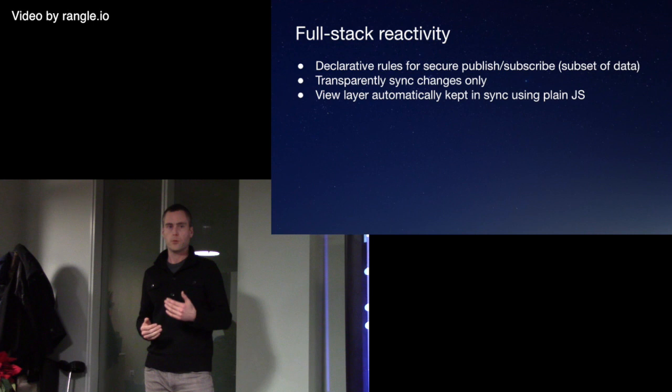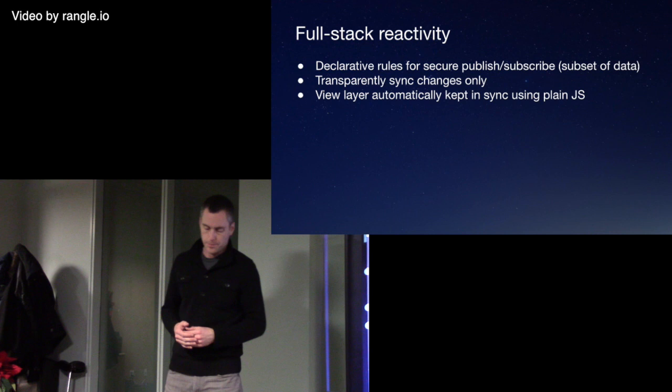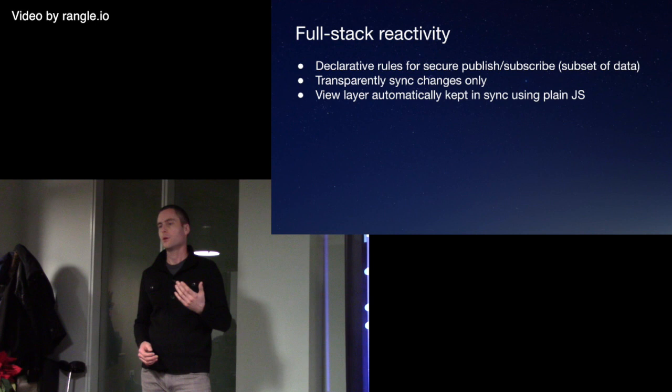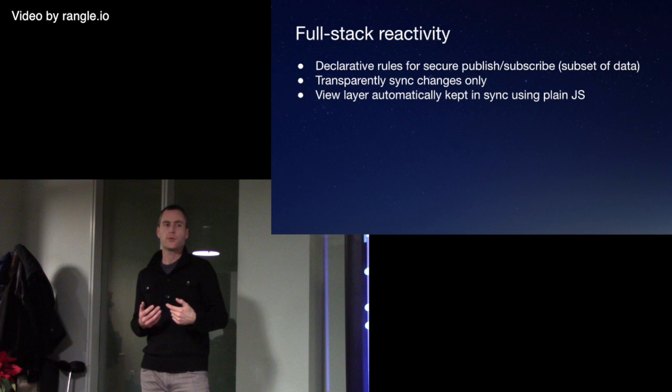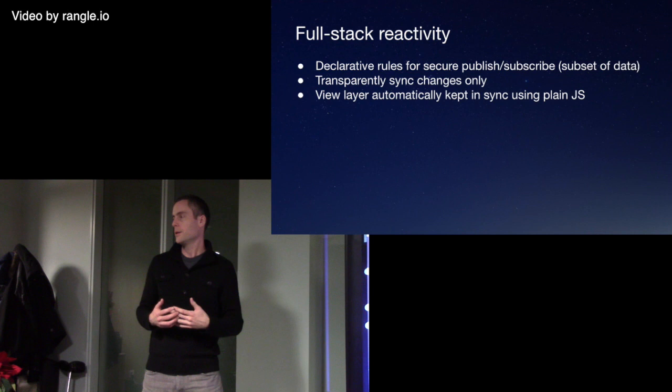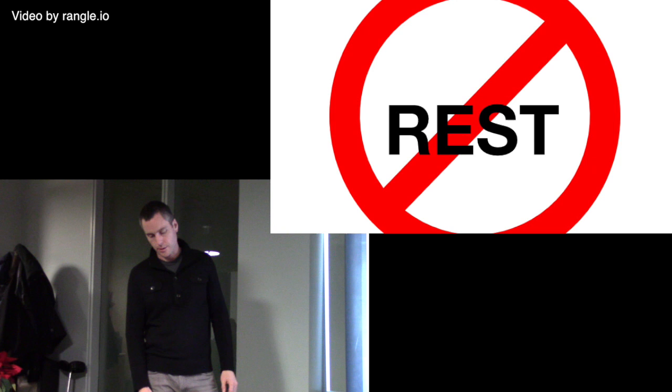Sometimes you have to think about what should be synced, but generally that works really well. The last part of that is that your view layer is automatically kept in sync. If you are displaying a certain record from the database on the screen and it gets changed — either locally or by another client — through a persistent WebSocket connection to your app, Meteor will automatically take care of updating the view layer. If you're using a variable in a template that got changed in the database, it will just change in your template. Generally, you don't have to think about it.